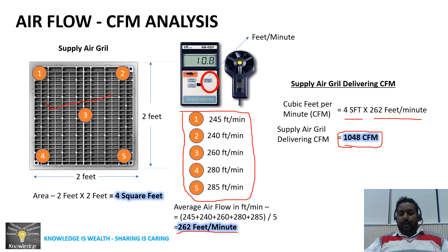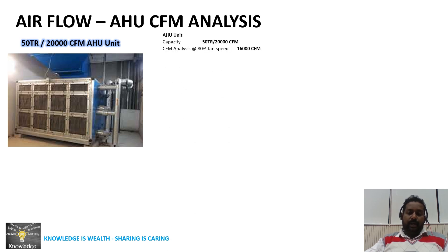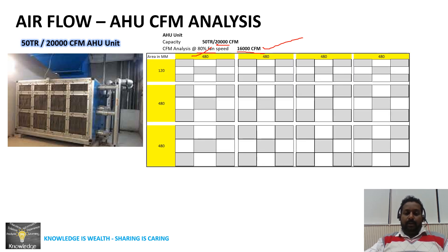Now let's calculate CFM for an AHU unit. Take the example of one EHU — a 50 TR, 20,000 CFM EHU — running at approximately 80% fan speed, so it needs to deliver 16,000 CFM. We will analyze whether this EHU is delivering the required CFM. Looking at the diagram, there are three rows — row 1, row 2, and row 3 — each row having four filters.